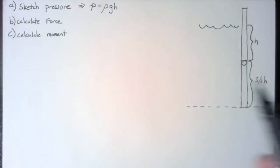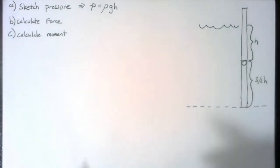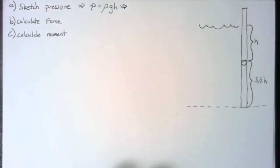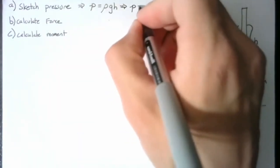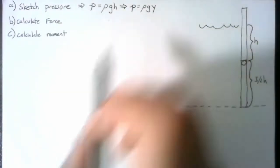This h value, it's a little misleading to use h both here and here. So instead of using h, I'm going to rewrite this as p is equal to rho, g, y. And I need to define what I mean by y.